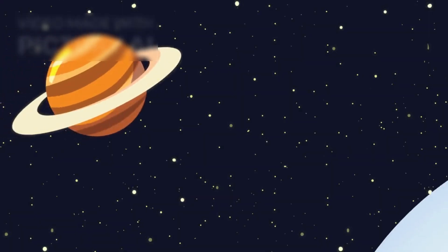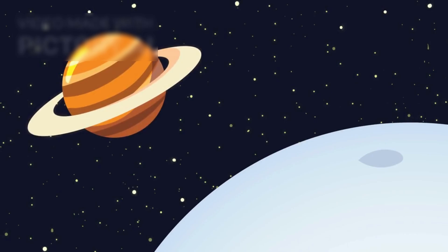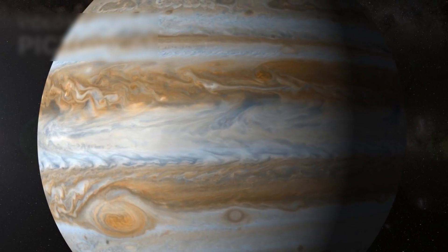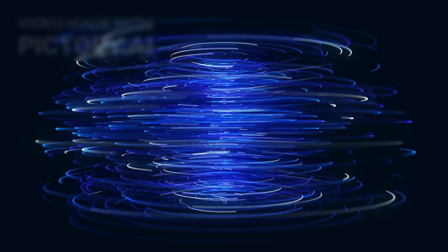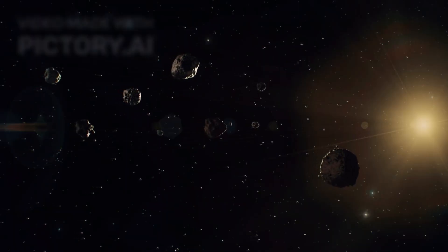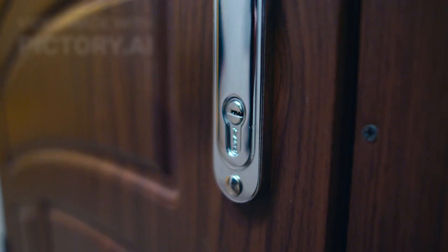Because Saturn isn't just massive, it bends time. Its gravitational well is deep. And its hexagonal storm at the north pole? Still unexplained. A perfect six-sided vortex. Stable, geometric, unnatural. What if it's not weather? What if it's a signal? A marker? A lock?